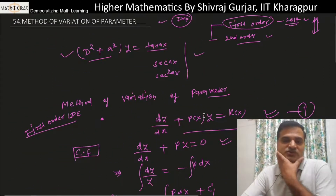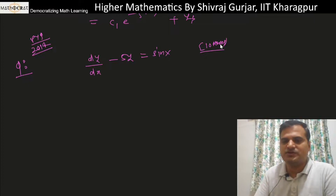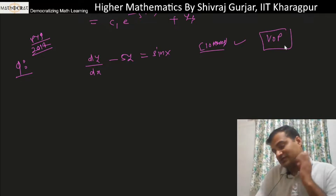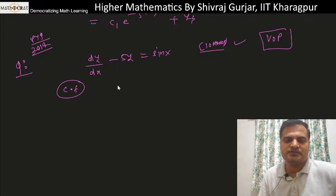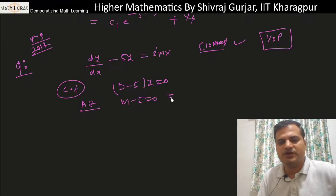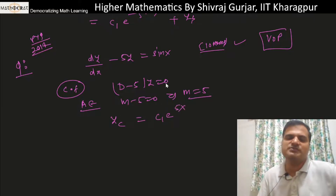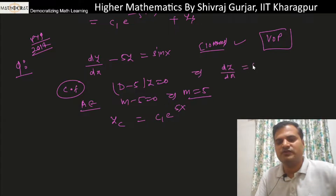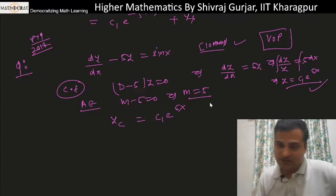This was asked in 2014 for 10 marks. The question was to solve by the method of variation of parameters. So let's look at the example. For the equation (d−5)y = sin x, the complementary function is found from m−5 = 0, giving m = 5, so y_c = c₁·e^(5x).